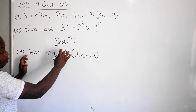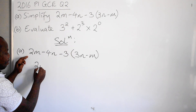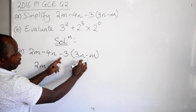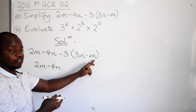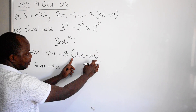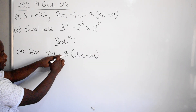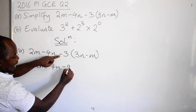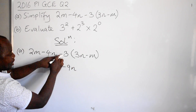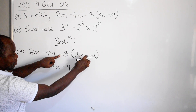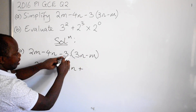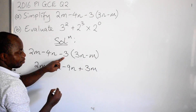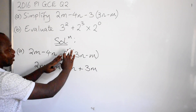On this side you copy the way it is: 2m minus 4n. Then here you multiply to get rid of the brackets. So you say negative 3 times 3n, which gives you negative 9n. Then negative 3 times negative m gives you positive 3m. So the brackets have gone.